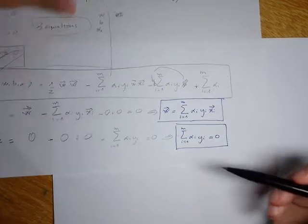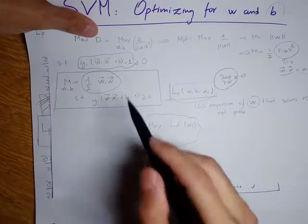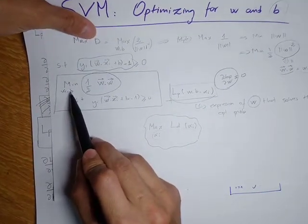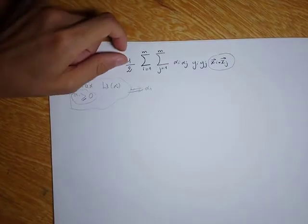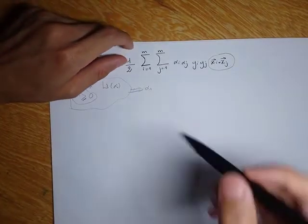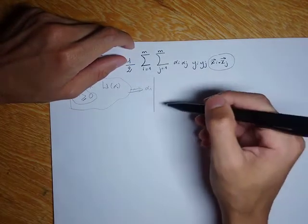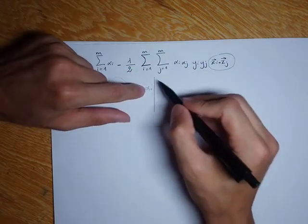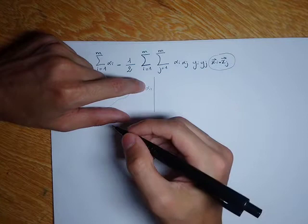In our optimization problem, we want to find not only w but also b. Before finding b, I want to talk about the interpretation of the different values of alpha_i. We have three possible interpretations.